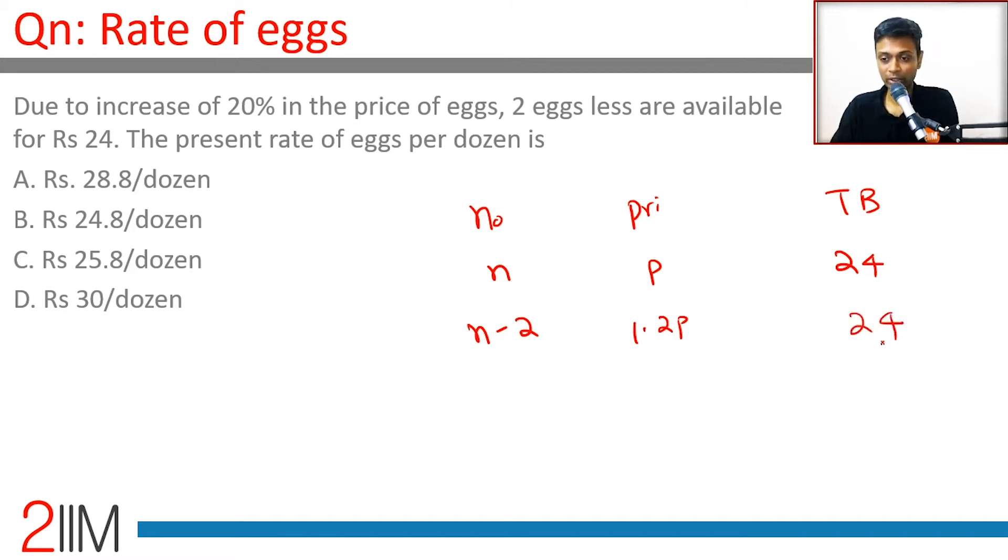The price is still 24. P to 1.2P becomes 6 by 5P, or N should become 5 by 6N. Only then the product will remain same.